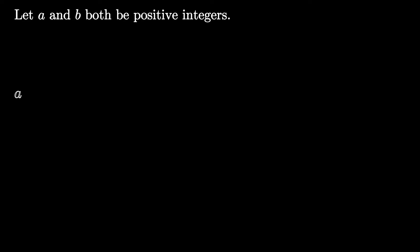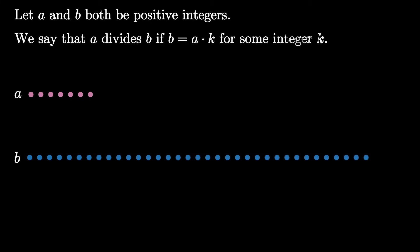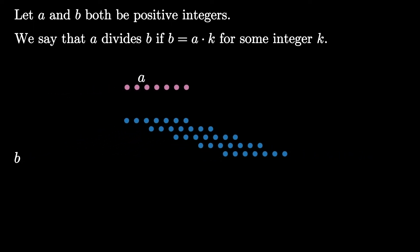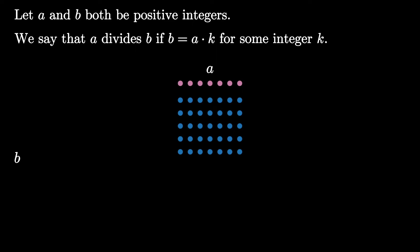Suppose you have two positive integers a and b. We say that a divides b if there exists an integer k satisfying b equals a times k. This means that we can arrange b into a grid with rows of size a.